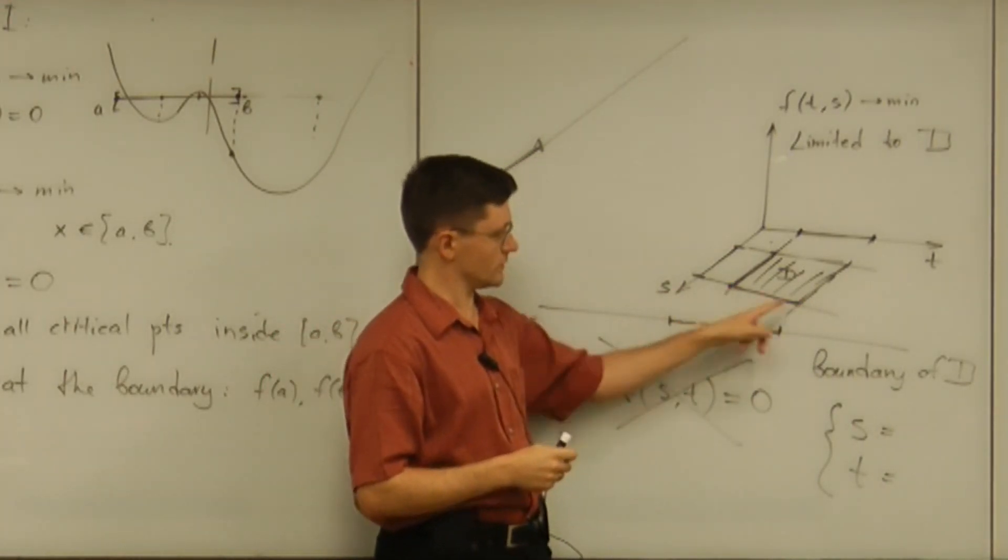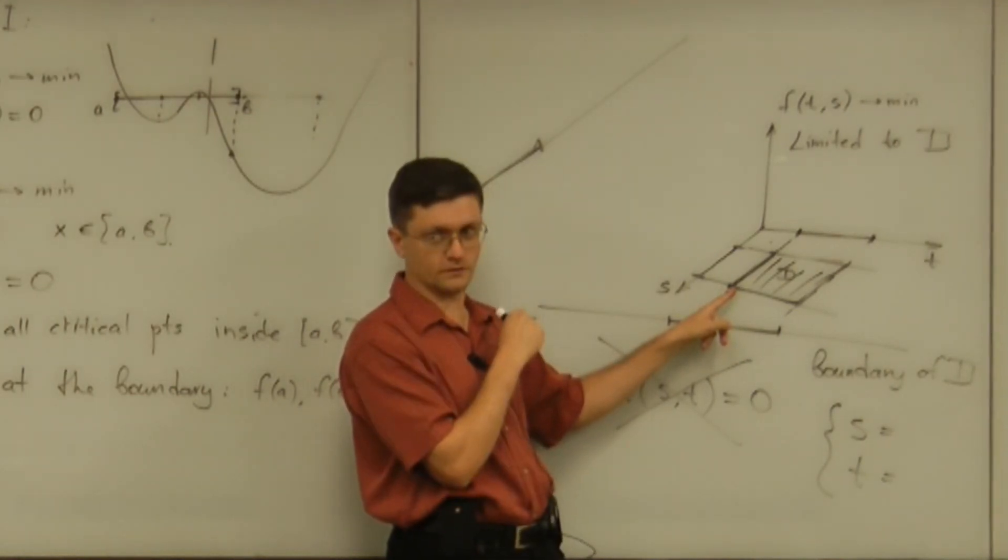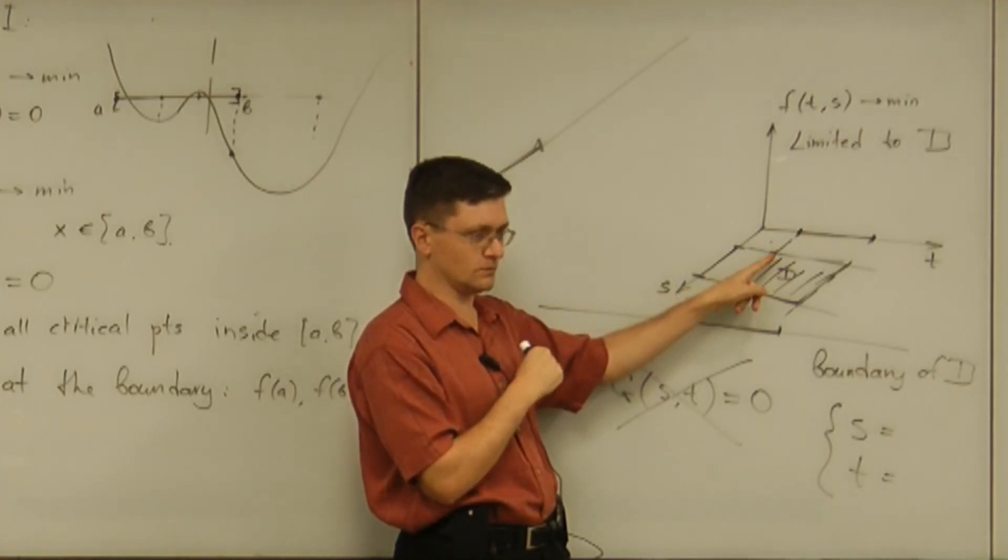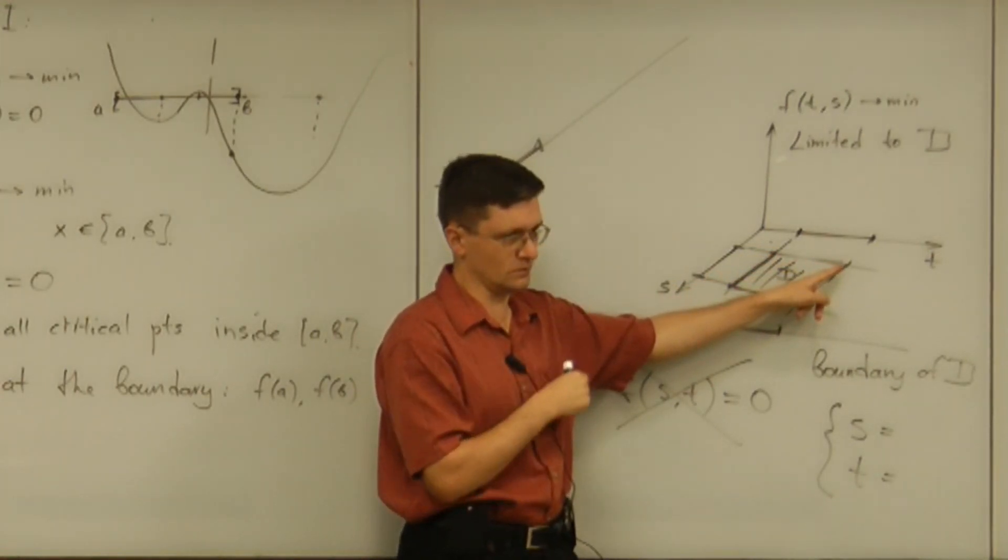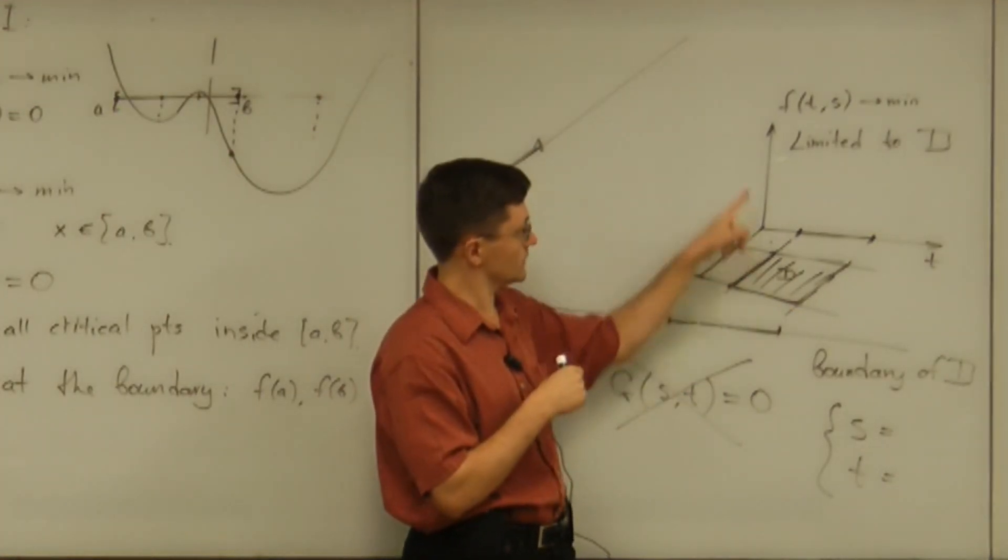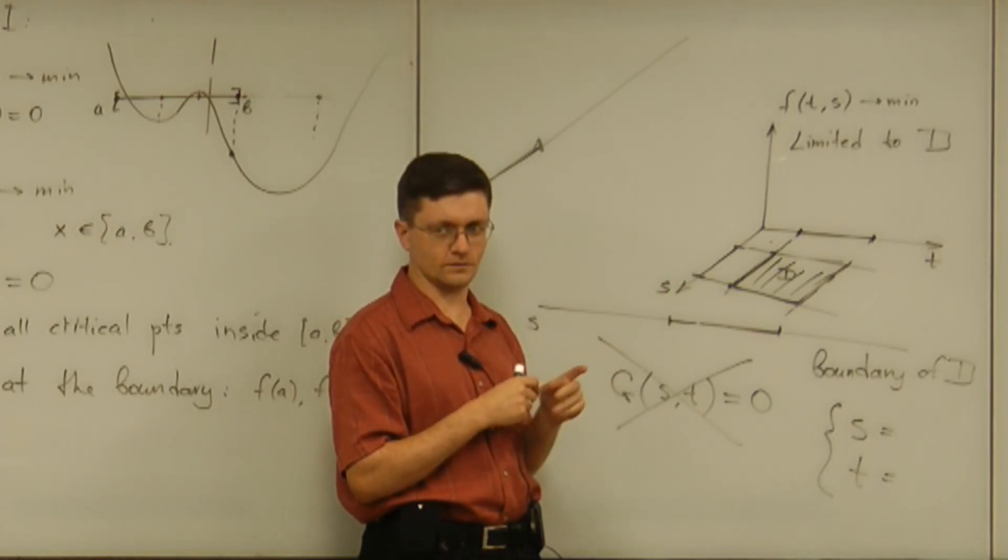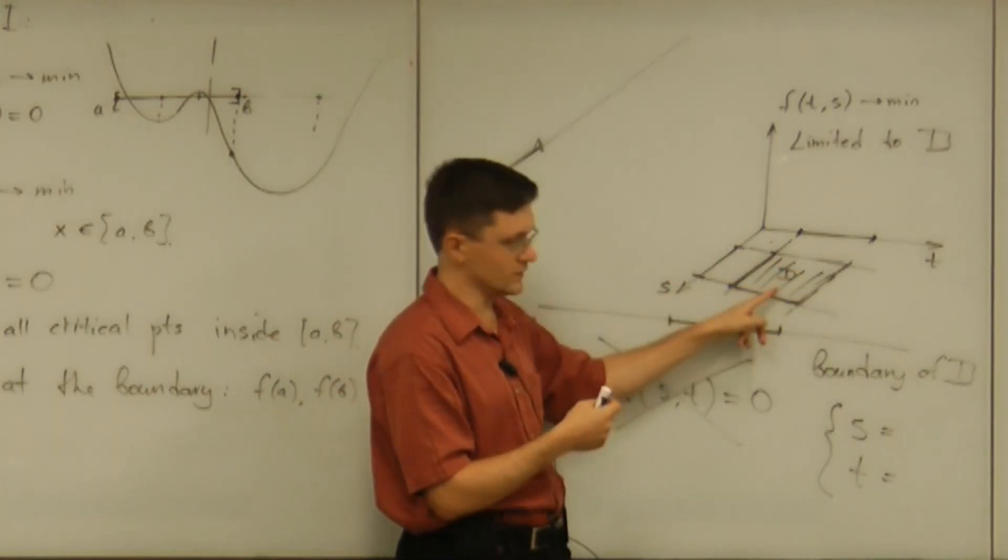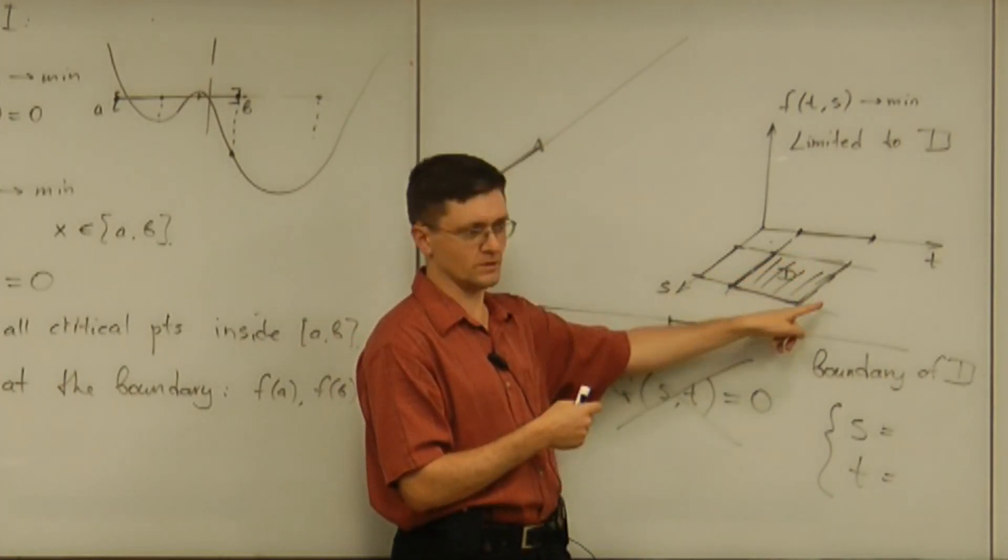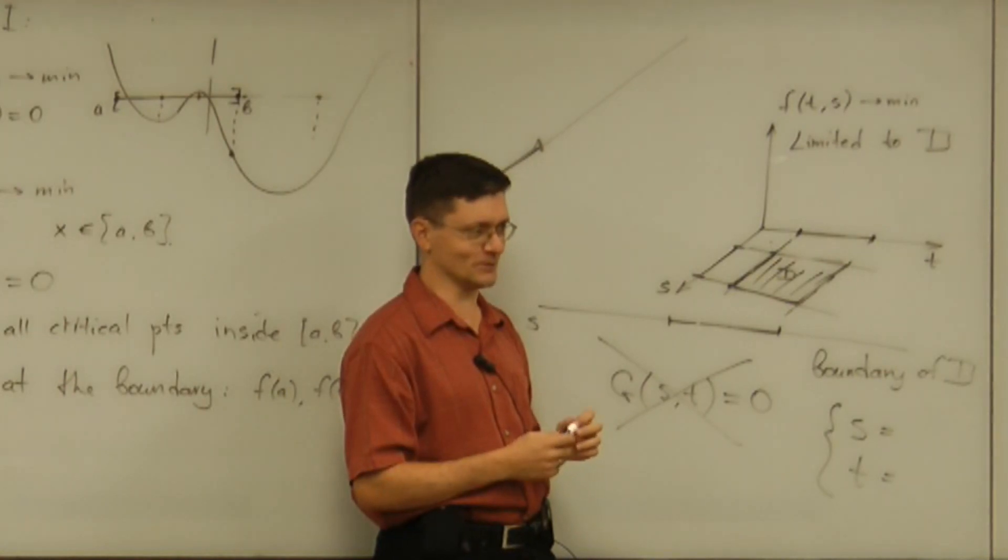And once you parameterize one side, you can find minimum of a function on that side. And then you parameterize the second, find minimum, the third, find minimum, the fourth, find minimum. Then compute the values of f on the critical points inside. So, you have minimum of those critical values and minimum here, minimum there, minimum there, minimum there. And just five numbers to compare. You can do that.